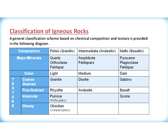In comparison, looking at the classification chart of igneous rocks, the general classification scheme based on chemical composition and texture can be seen in this chart. The compositions in igneous rocks are generally felsic (also referred to as granitic, since granite is the most common felsic rock), intermediate (also referred to as andesitic, since andesite is the most common intermediate rock), and mafic (also referred to as basaltic, since basalt is the most common mafic rock). These are three different compositions that comprise most igneous rocks.